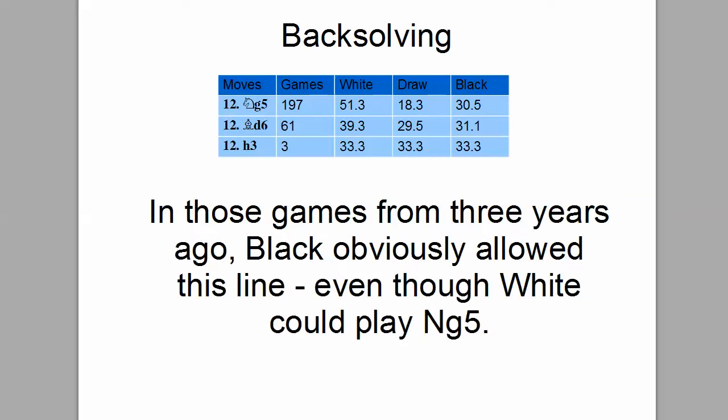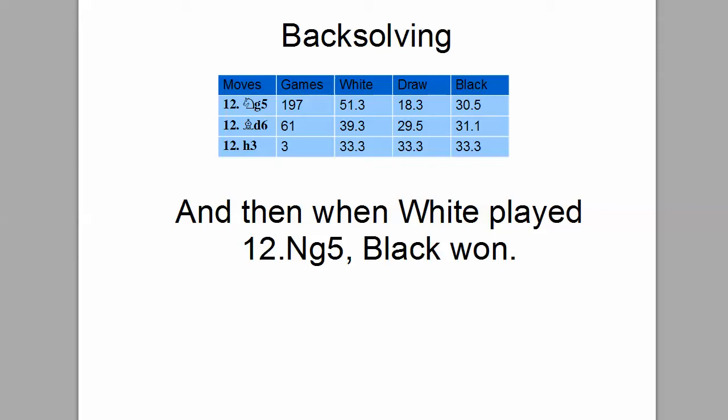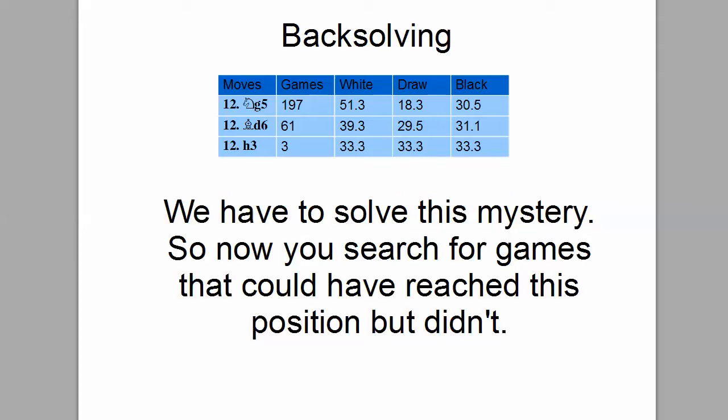What's going on here? In those games from three years ago, black obviously allowed this line even though white could play Knight G5, with hundreds of games in the history. And then, when white played Knight G5, black won. We have to solve this mystery.